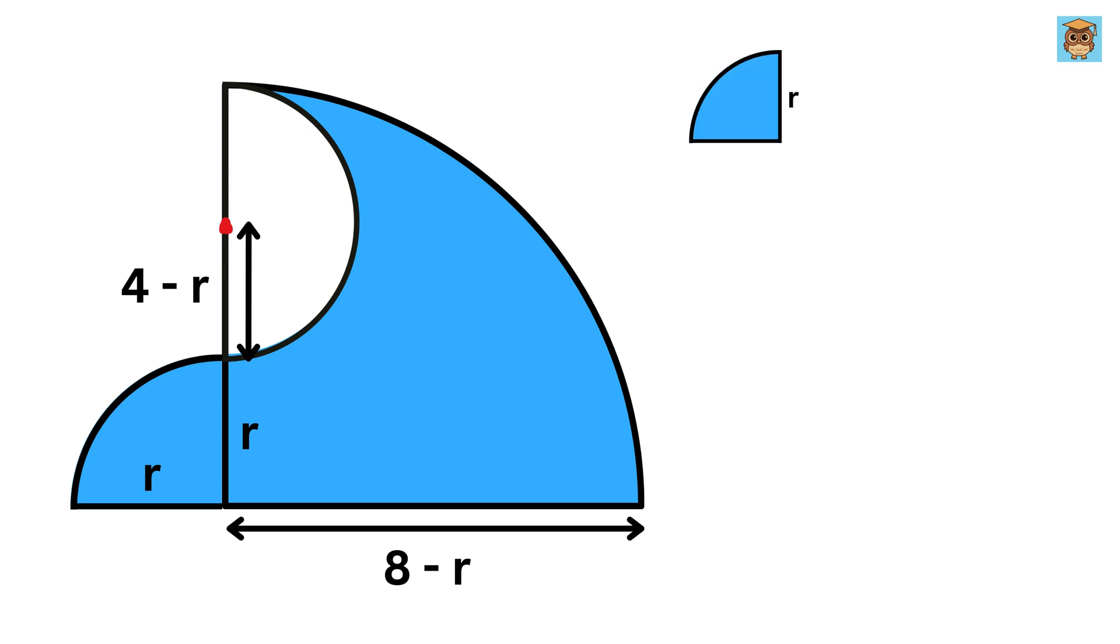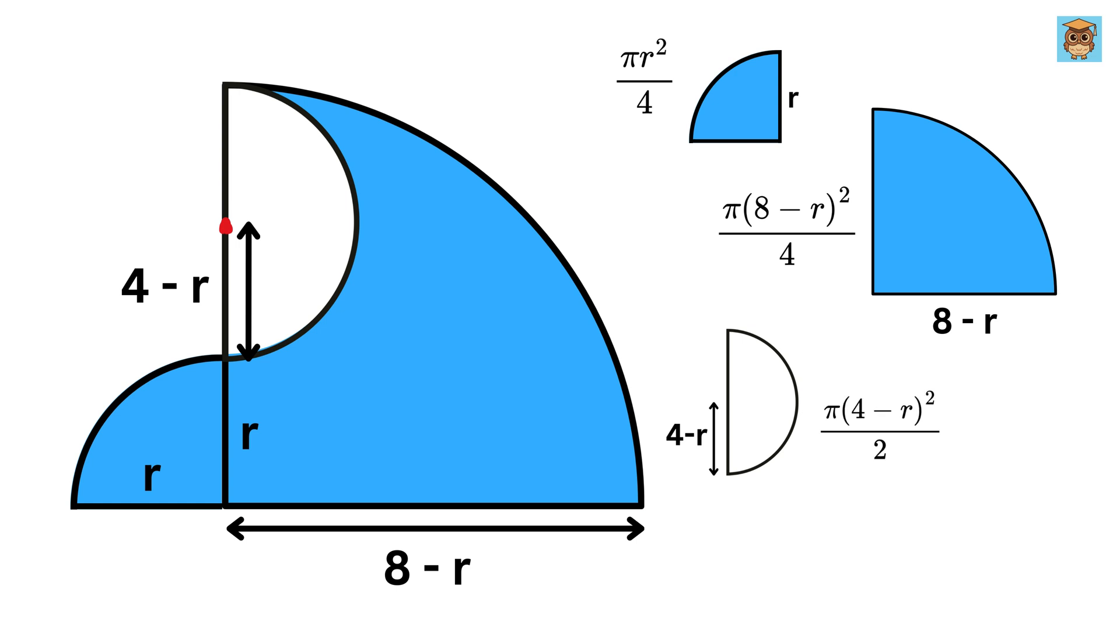So, for this case, the area of this quarter circle will be simply pi r square over 4. Then the area of this quarter circle will be simply pi times 8 minus r whole square over 4. And the area of this semicircle will be equal to pi times 4 minus r whole square over 2.